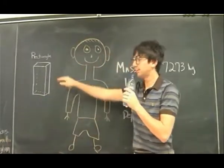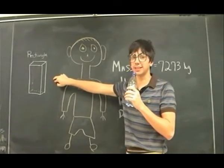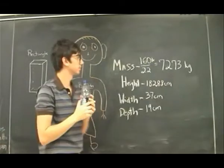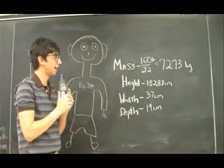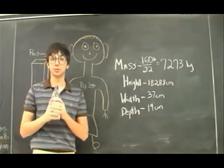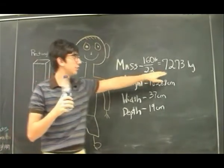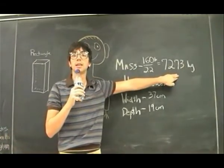It's important to note, we're going to be considering Big John as a rectangle, because that makes things easier. Lastly, we took his mass, buck sixty, used Google to find out what that meant, and then divided it by two point two to find his kilogram mass.